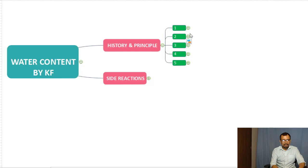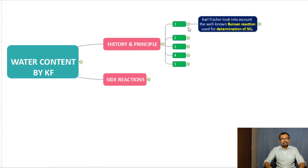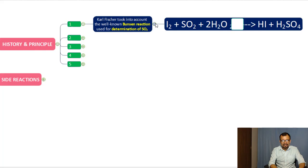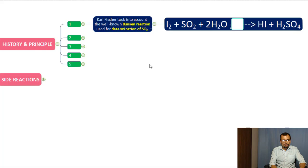To understand the history of the KF reagent, you need to go back to when the Bunsen reaction was widely used for determination of sulfur dioxide present in aqueous solutions. In this reaction, iodine reacts with sulfur dioxide and water to produce hydroiodic acid plus sulfuric acid. This is the reaction Bunsen used for determination of sulfur dioxide.